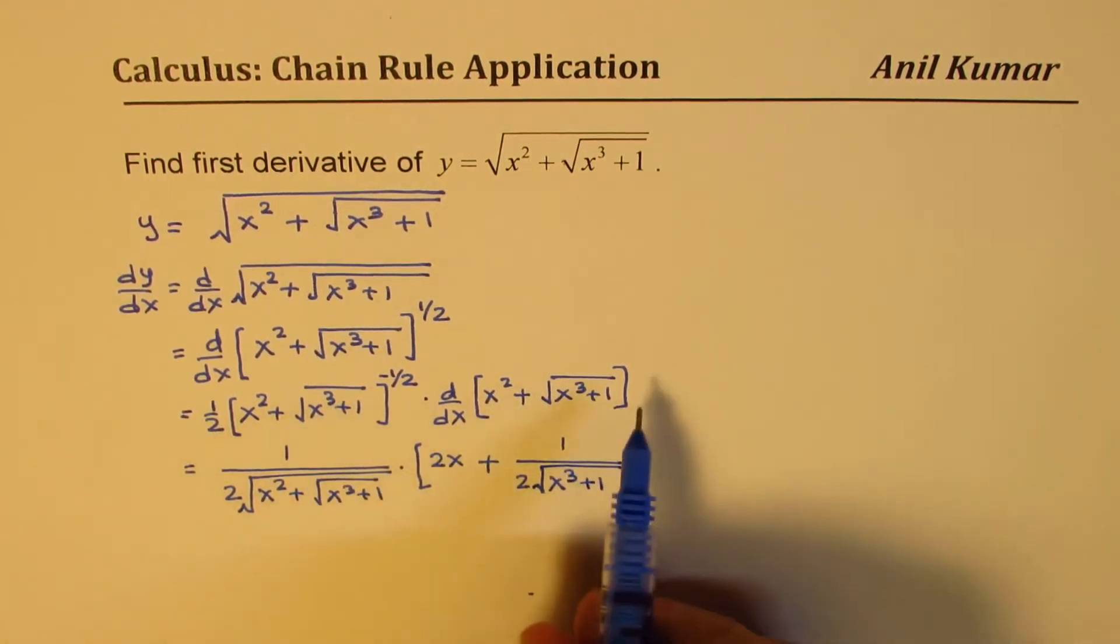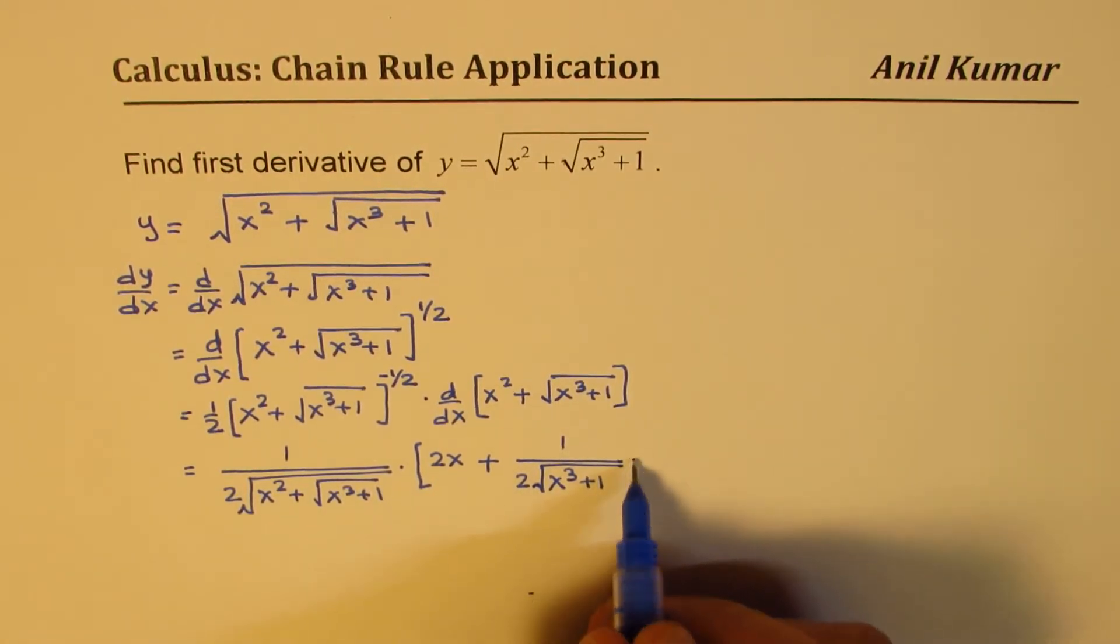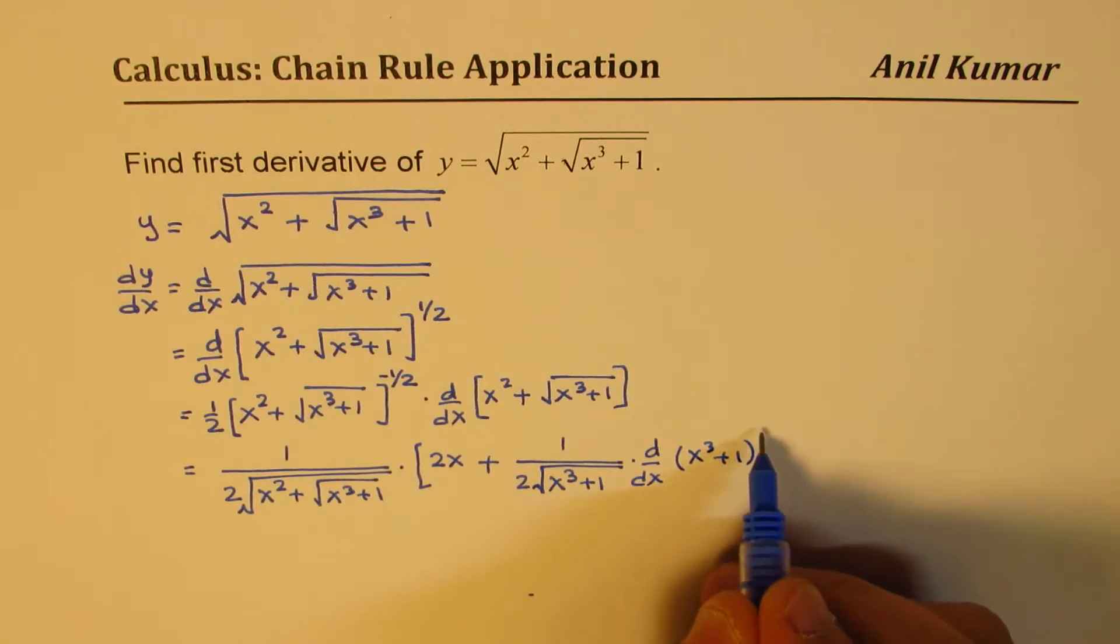You could do it like this also, writing this as power of half and then minus half, it comes in the denominator as we wrote here, times inside function derivative, times derivative of x cube plus 1. Do you see that?